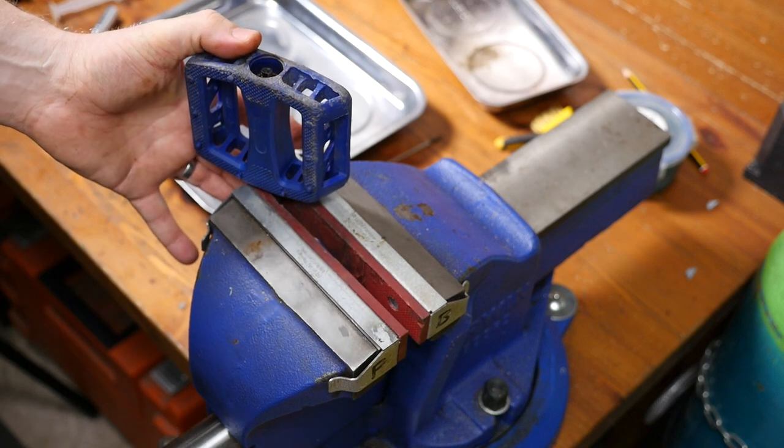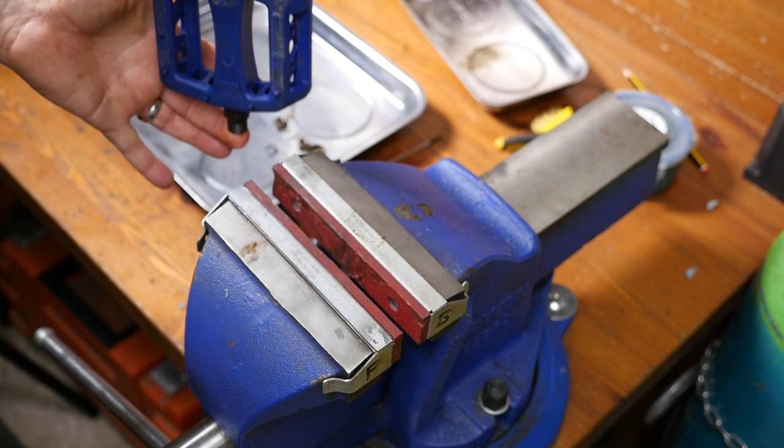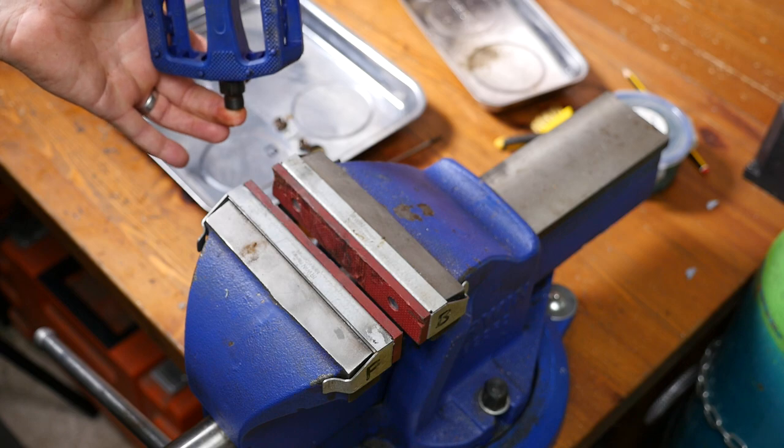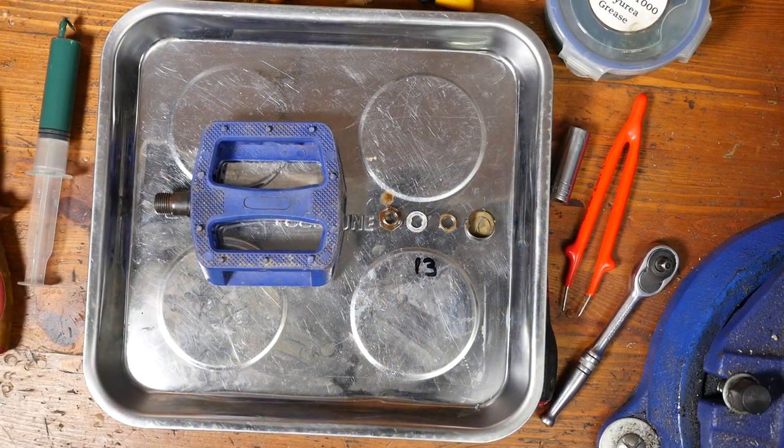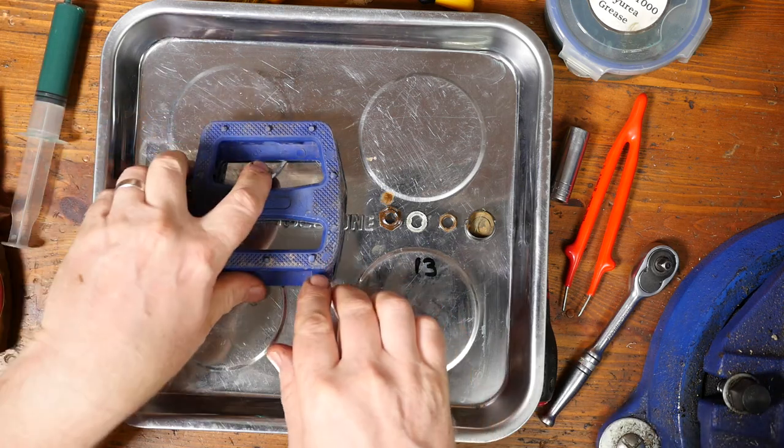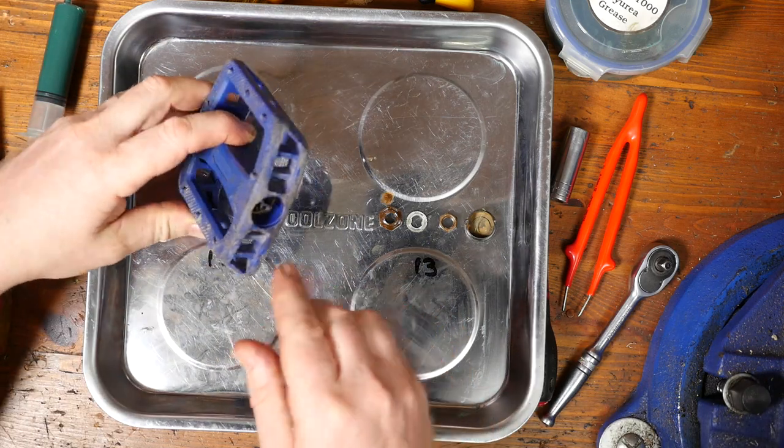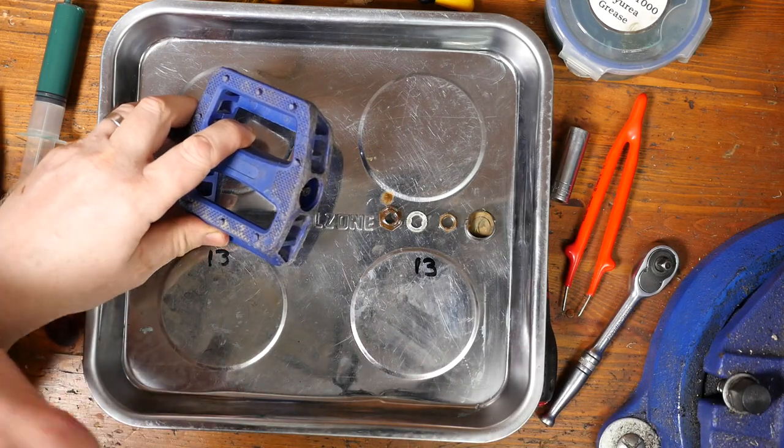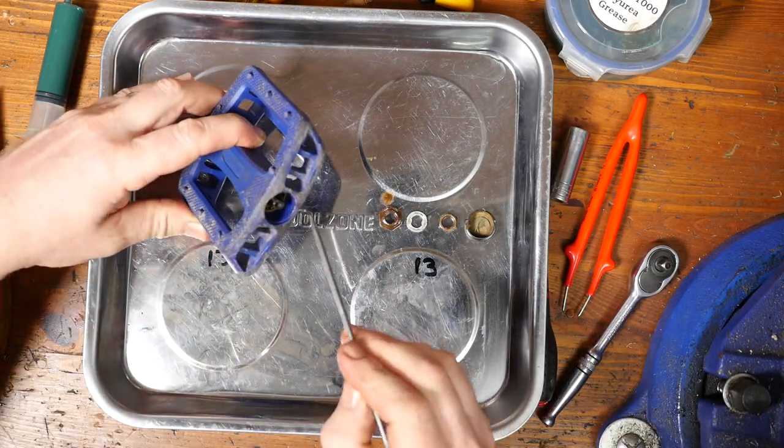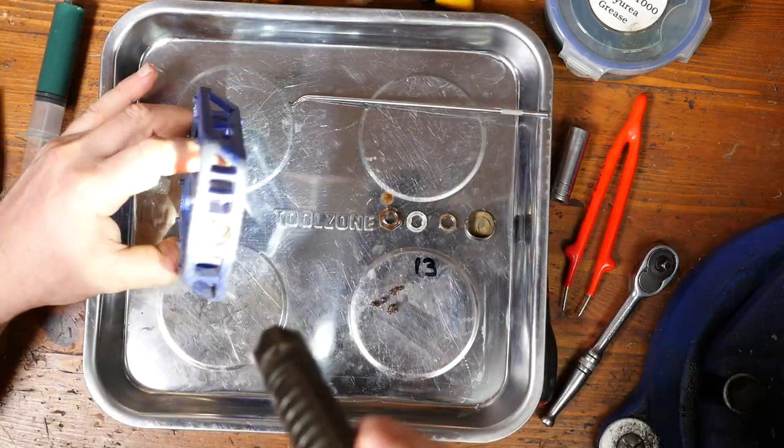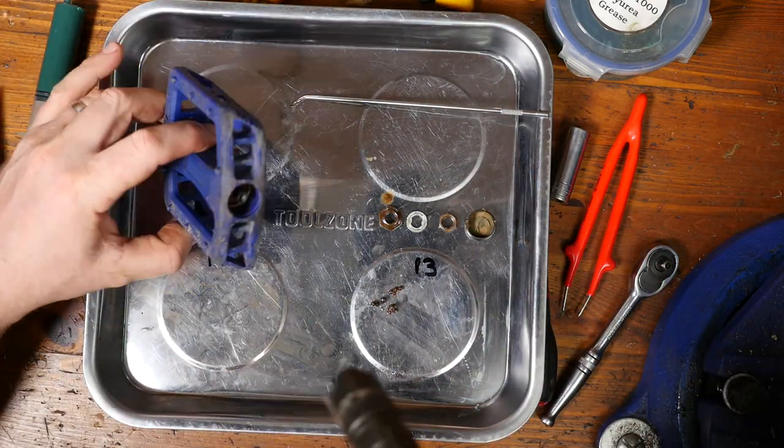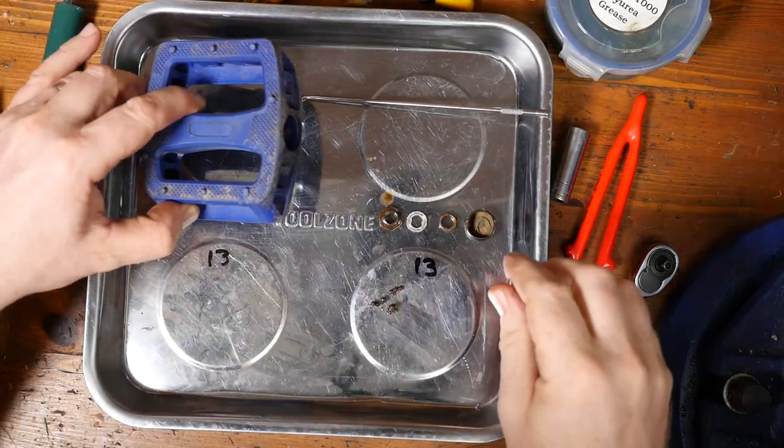So remember to hold the axle up as you remove the pedal, otherwise all the bearings will fall out. And take it onto your tray. So I'll speed this part up again, because this is just removing the bearings very carefully and keeping them all together. Using a torch again to check there's no extra bearing still in there.